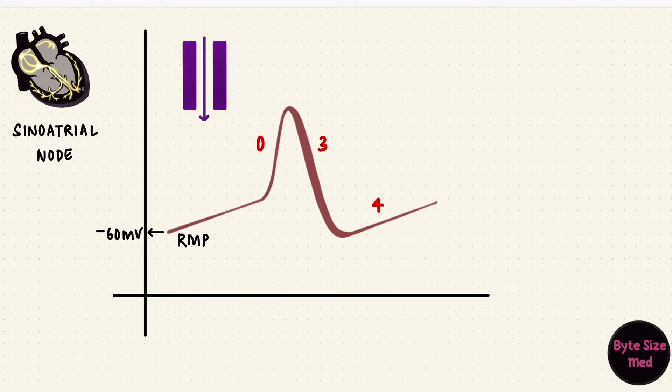It's actually the calcium channels that make the upstroke happen. But the calcium channels are slower than sodium. These are L-type calcium channels. Slow to open, slow to close. So the upstroke is slower. It's not as steep as the ventricular action potential either.